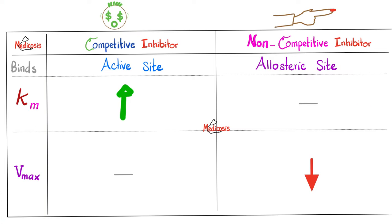Let's compare competitive versus non-competitive. Competitive binds to the active site; non-competitive binds to the allosteric site. Competitive: KM will climb because we've crushed the affinity. Non-competitive does not affect affinity, therefore does not affect KM. Competitive is the only one that does not lower VMAX; every other inhibitor lowers VMAX.